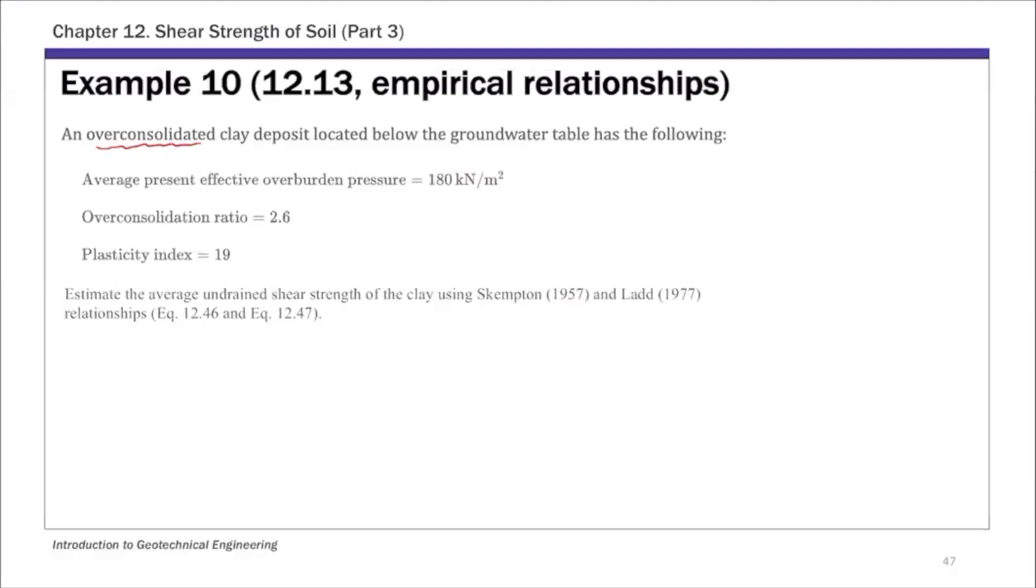We know the average effective overburden pressure is 180 kN/m². OCR, the overconsolidation ratio value, is 2.6, which is greater than 1, so we know it's overconsolidated clay. And plasticity index PI is 19.